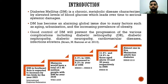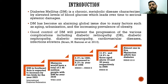Diabetes mellitus is a chronic metabolic disease characterized by elevated levels of blood glucose, which leads over time to serious systemic damages. Diabetes has become a global issue due to many factors such as aging, urbanization, and the increasing prevalence of obesity. Good control of diabetes will definitely prevent the progression of the various complications, which can include diabetic retinopathy, diabetic nephropathy, diabetic neuropathy, cardiovascular diseases, infections, etc.